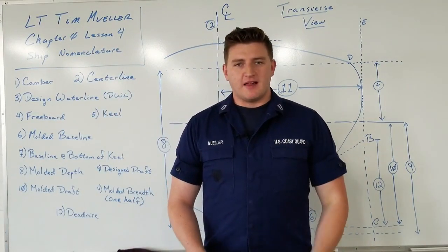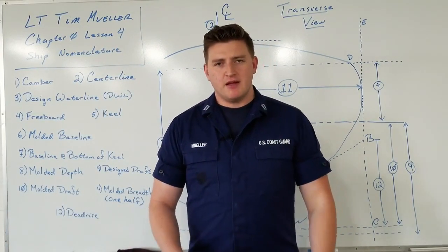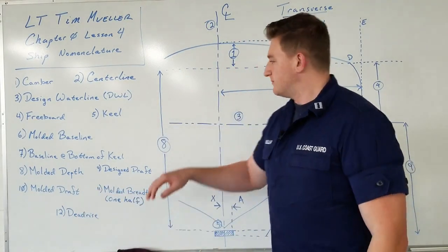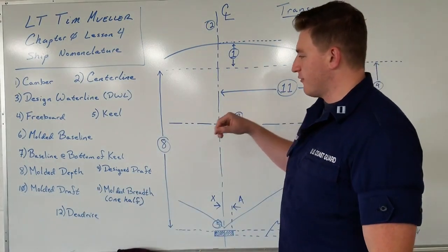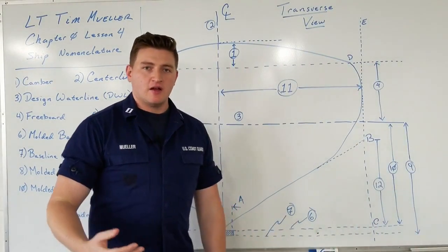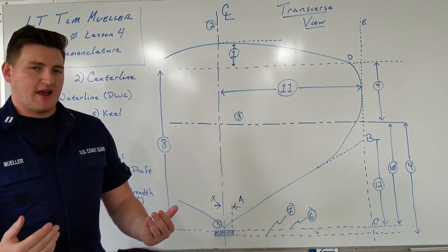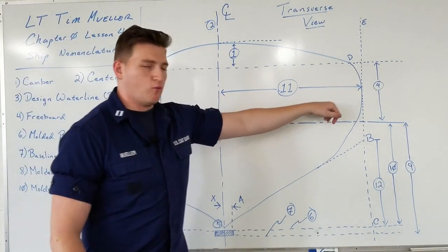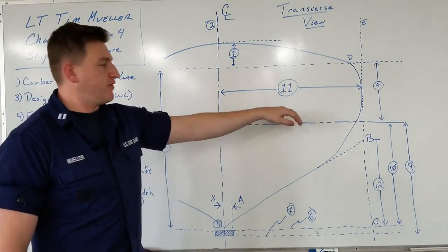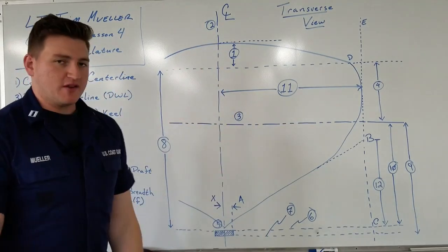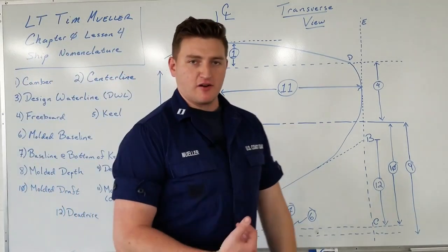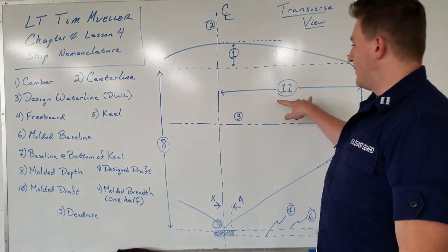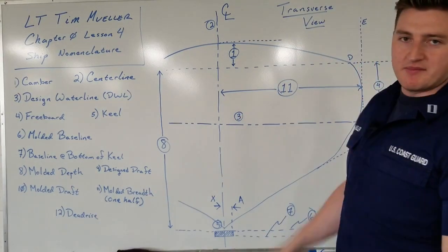Next is molded breadth, which many people call the beam of the ship — essentially the extreme width of the vessel. This is important when transiting a canal or any restricted passage. Number eleven represents one half of the molded breadth, measured from the center line, so the full molded breadth is that distance times two.